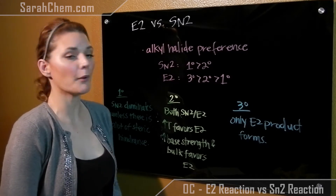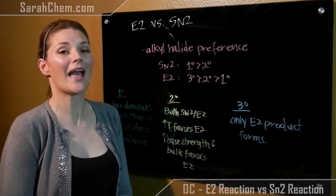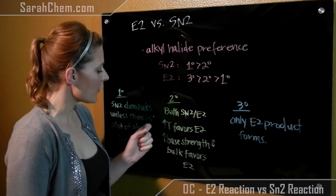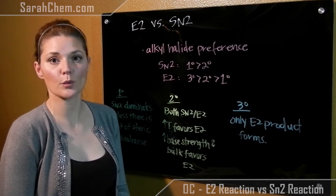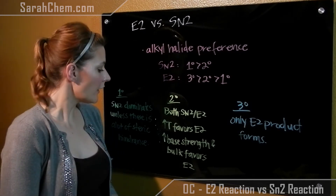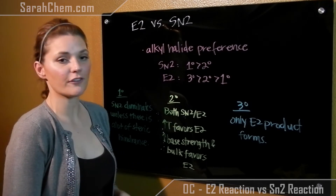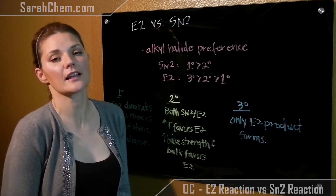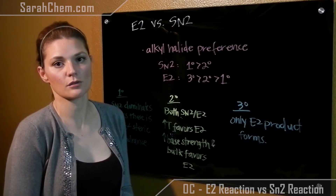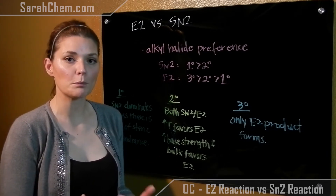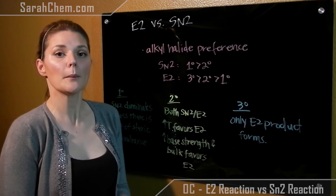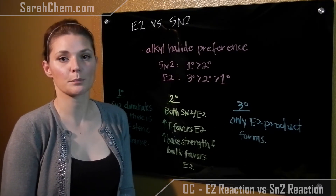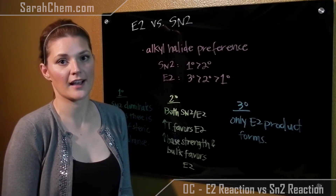In the case of a secondary alkyl halide, both SN2 and E2 will be present. If there's high temperature, E2 will be favored. Additionally, if you have a very strong base or a very bulky base, E2 will also dominate. Usually you'd give both products, but those are cases where you may say that E2 was preferred over SN2.